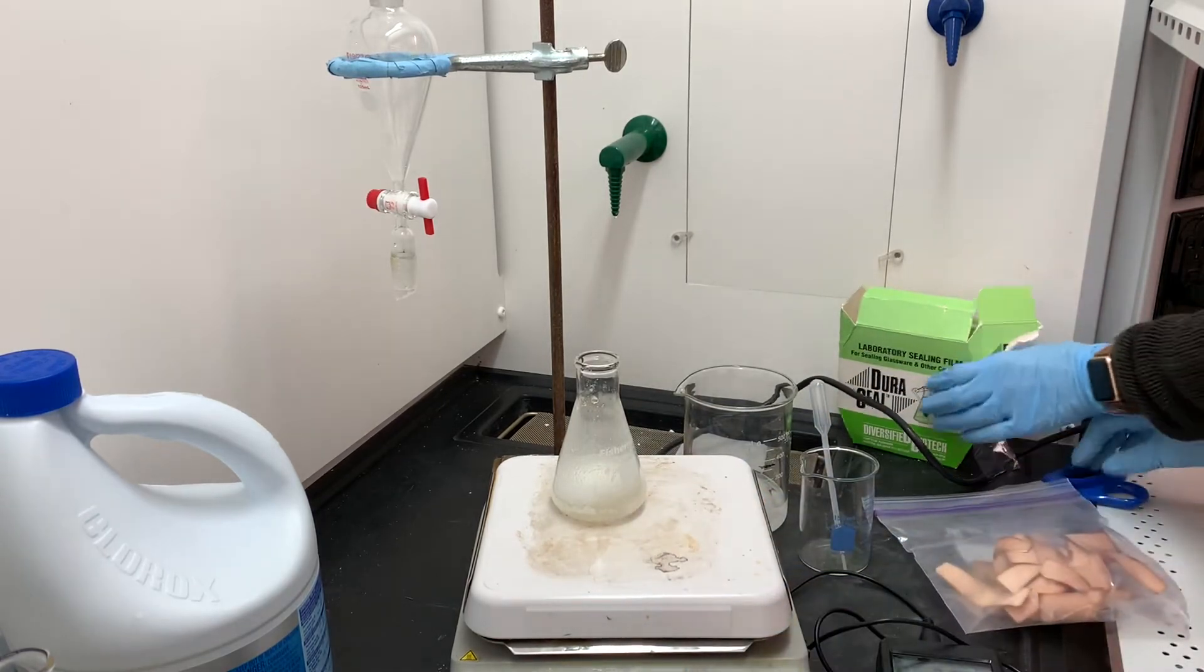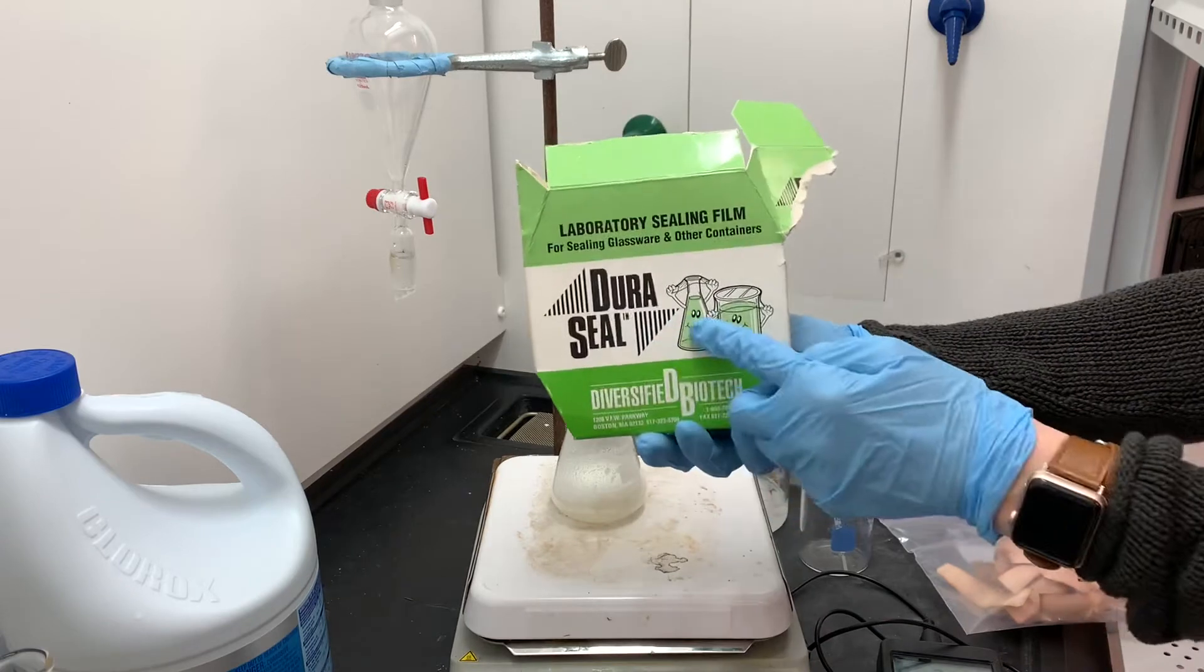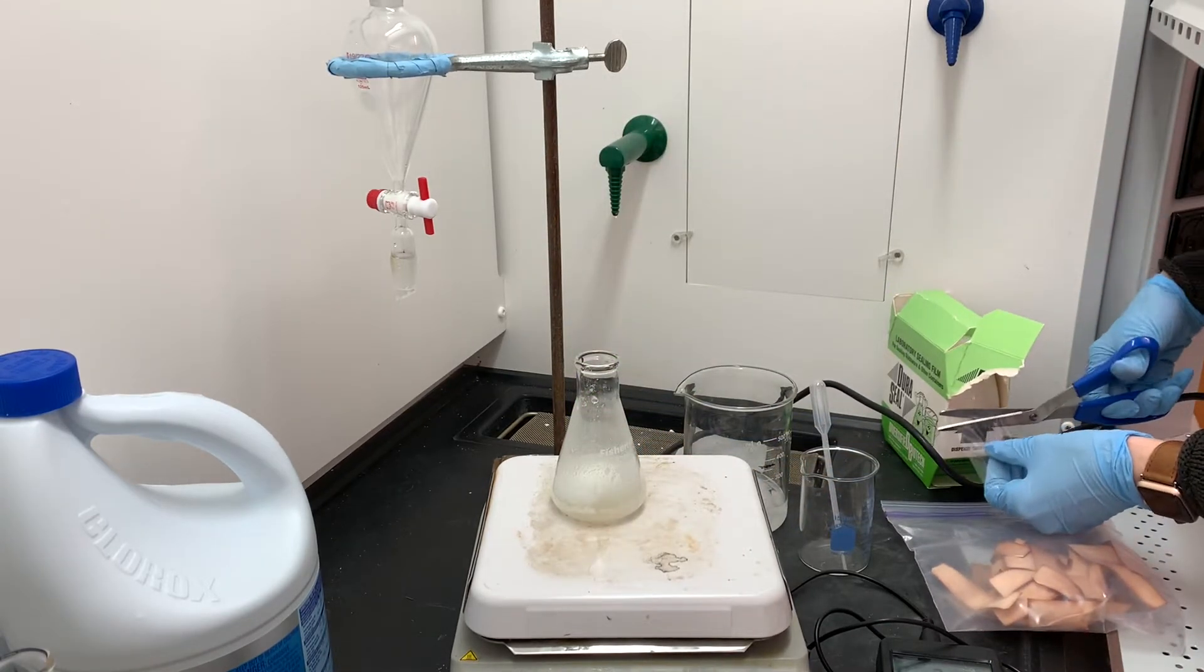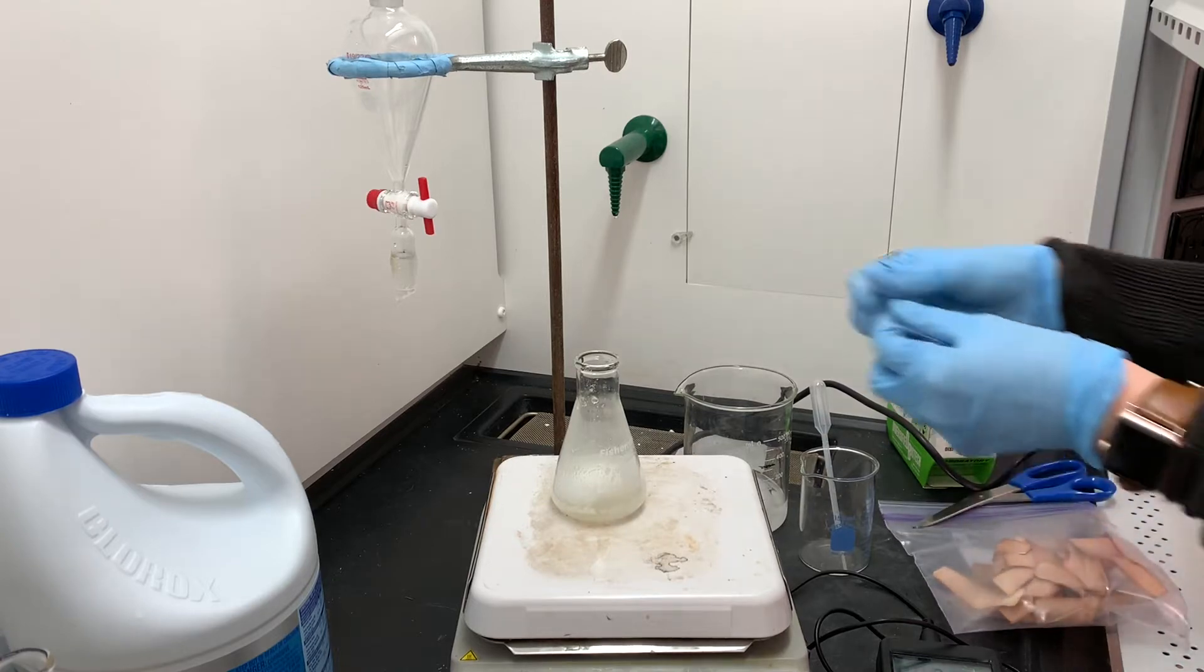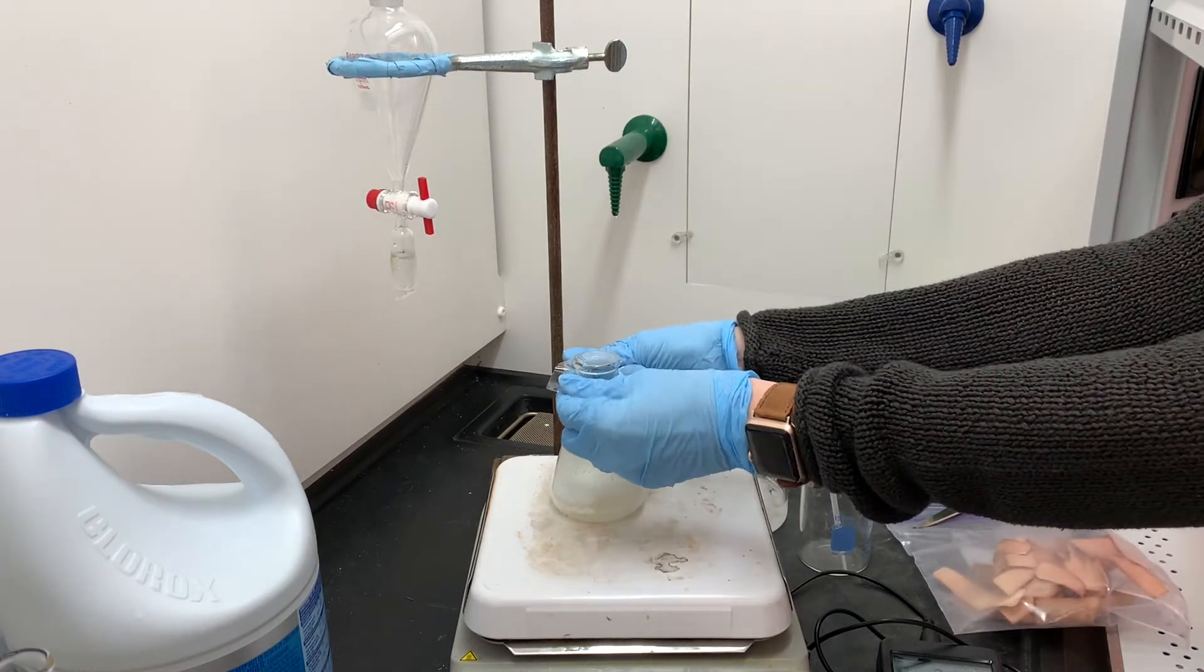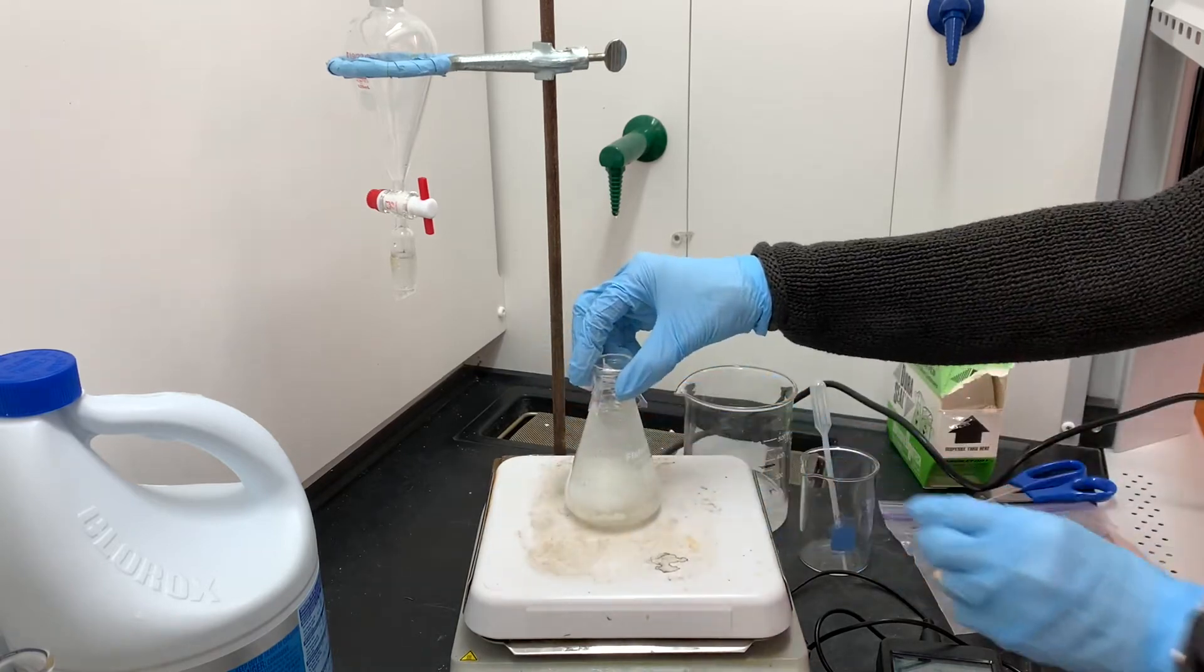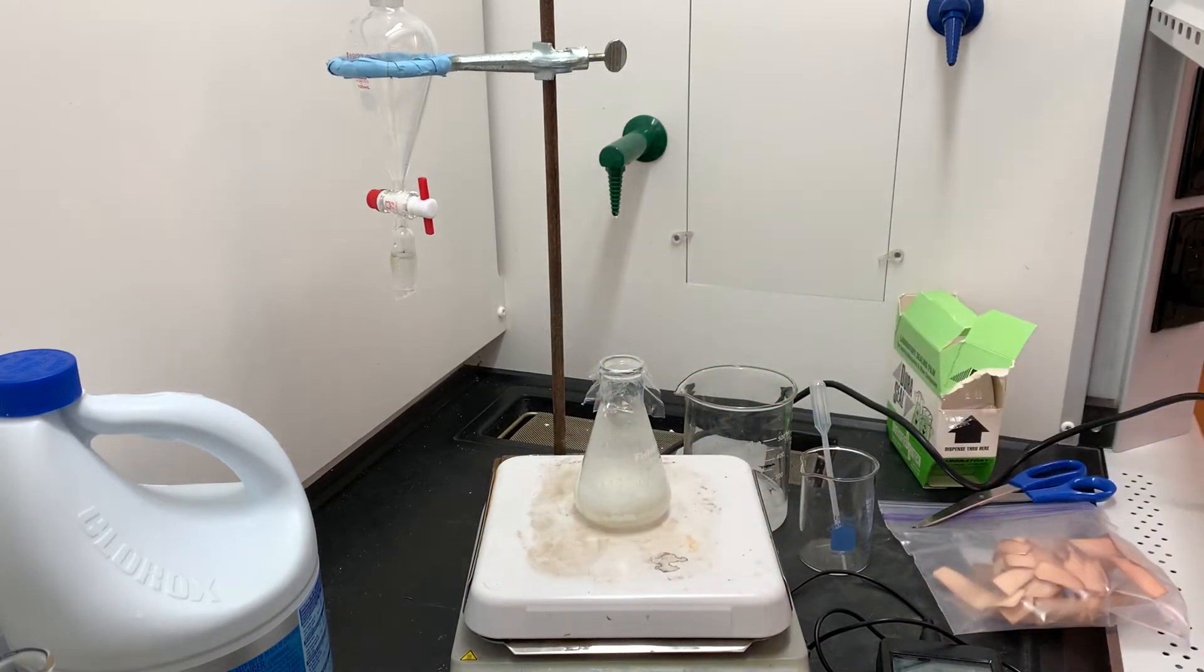So in order to keep this safe during the 30-minute reaction period, I'm going to be using some of this film to cover the top of the Erlenmeyer flask. And once I get it all sealed up, I'm just going to let it sit and stir for about 30 minutes and continue testing it with starch iodide paper about once every five minutes to make sure there's plenty of bleach.